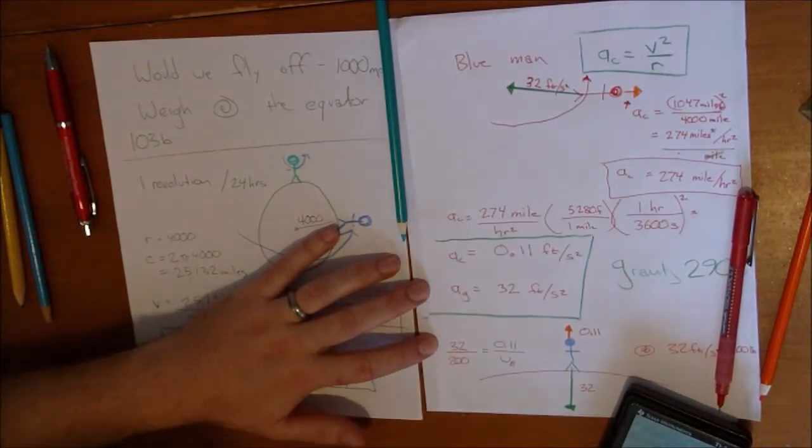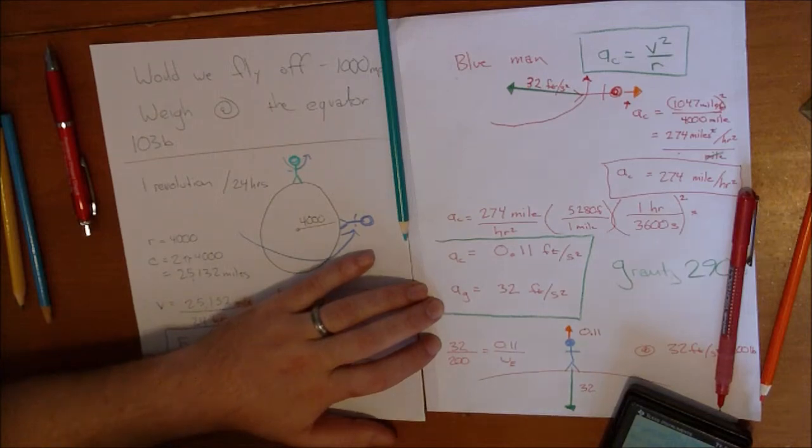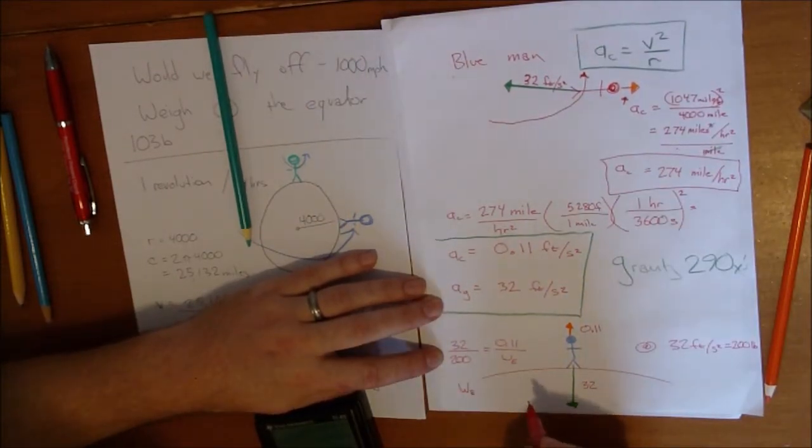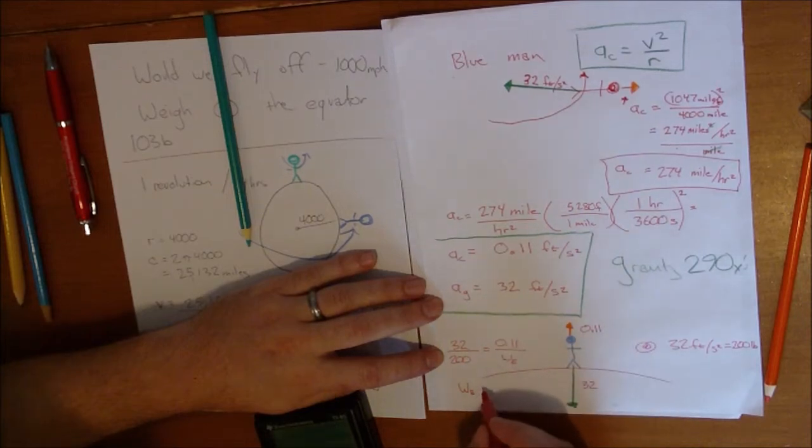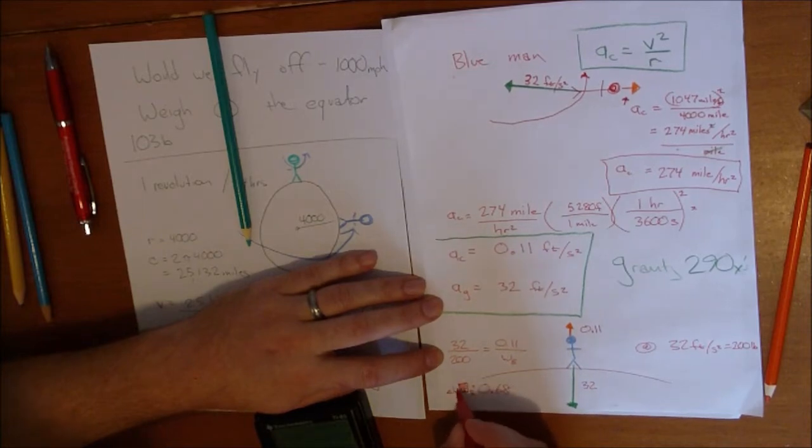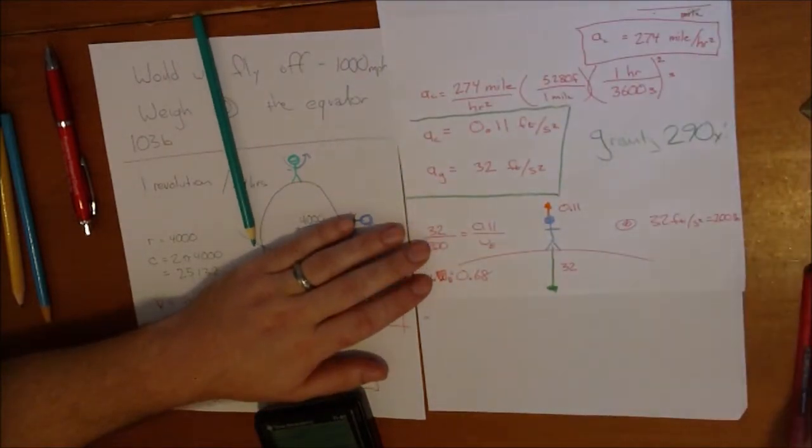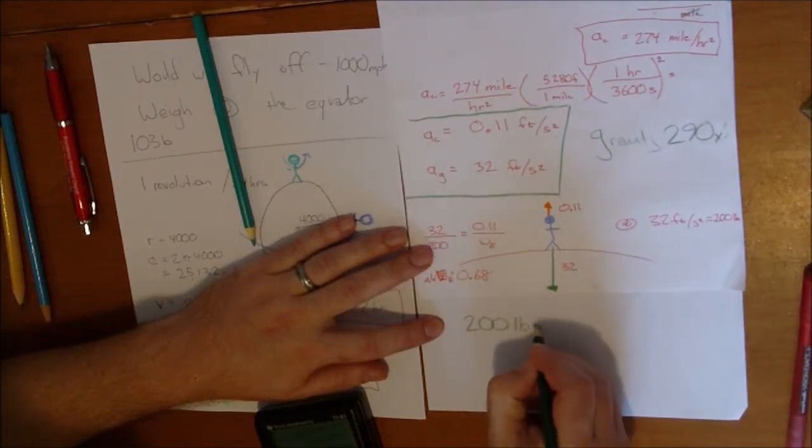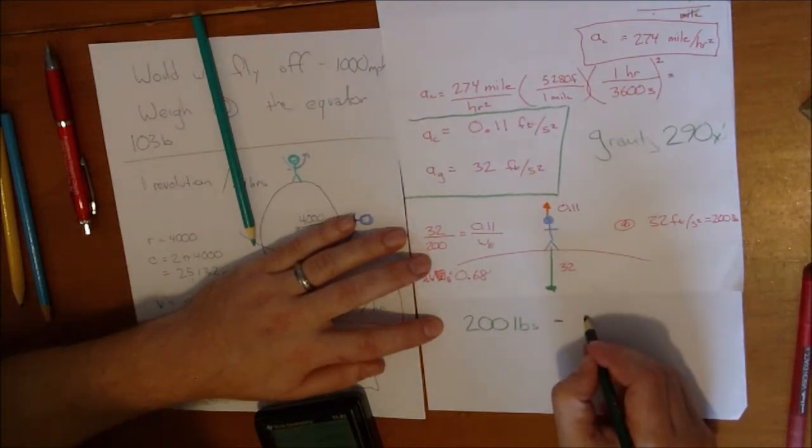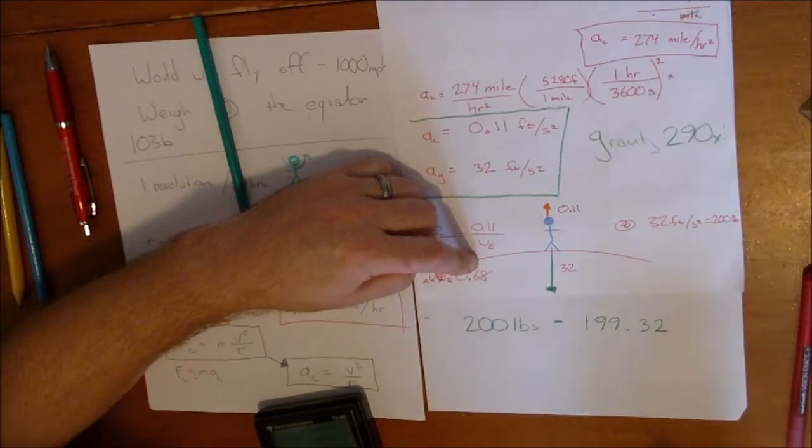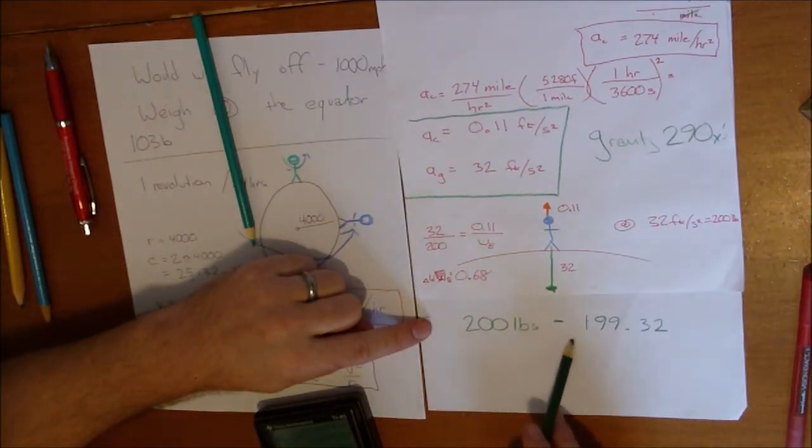So we want to solve for the weight at the equator. So we're going to multiply that across and this across. So we will get 0.11 times 200 divided by 32. And that comes out, the weight of me at the equator, or the weight associated with this, is 0.68. That's not my weight at the equator. That's the change in the weight. So 200 pounds minus 2 thirds of a pound. I weigh 200 pounds at the pole. And at the equator, I weigh 199.32. My weight at the equator has been decreased by 2 thirds of a pound.